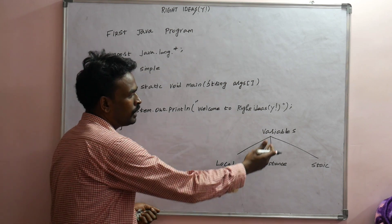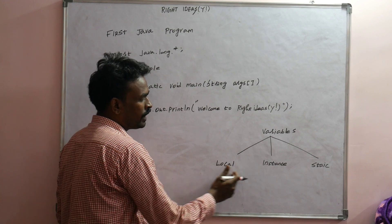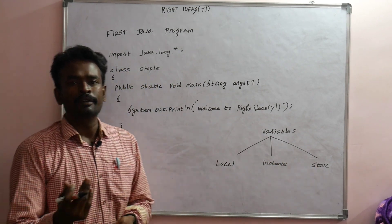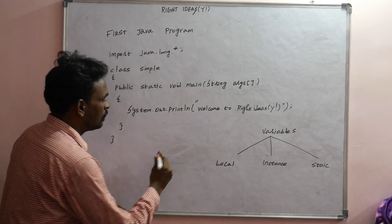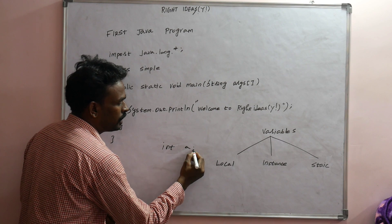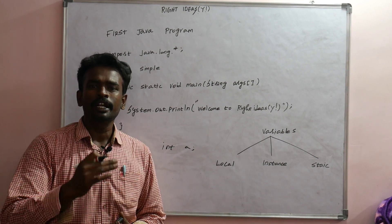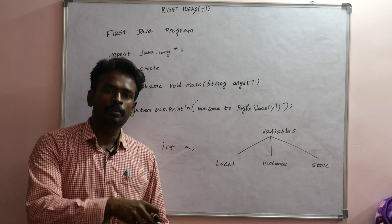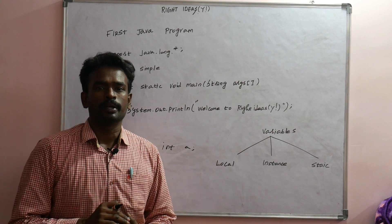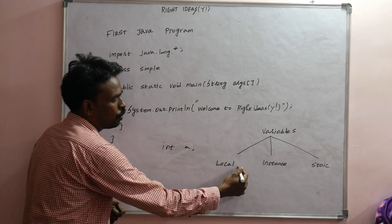Variables can be classified into three types in Java programming: local variable, instance variable, and static variable. A variable is an identifier, for example, int a, where 'a' is the variable. Variables are related to real-world concepts like Student and Employee, and an object is related to the variable.